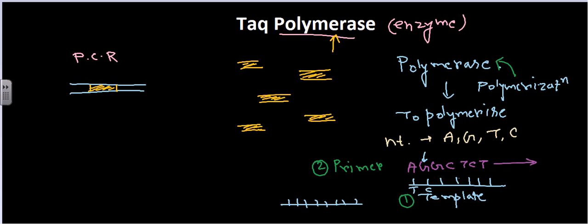A primer is simply a short stretch of nucleotide sequence which provides a 3' hydroxyl end. DNA polymerase requires this 3' hydroxyl end to elongate and start the polymerization process. Once it has the 3' hydroxyl from the primer and has a template, it keeps on adding nucleotide sequences in a particular direction.